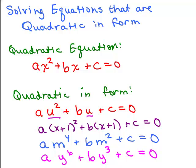Notice something about the exponents: whatever the middle exponent is, the first exponent is twice as big. The standard quadratic has u to the first, so u squared is twice as big. With (x plus 1), the squared exponent is twice the first. With m squared the exponent is 2, and 4 is twice as big. With y cubed, 6 is twice as big. That's what it means for an equation to be quadratic in form.